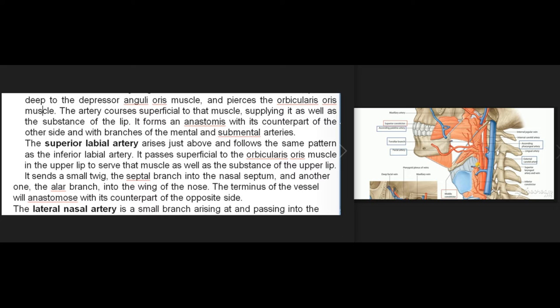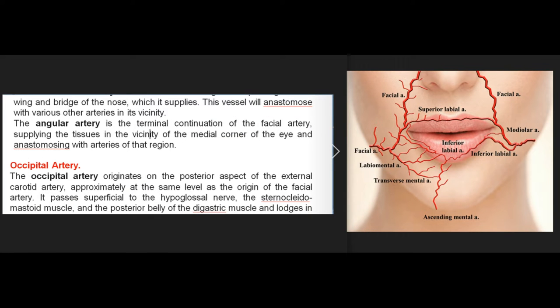The superior labial artery follows the same pattern as the inferior labial artery, passing superficial to the orbicularis oris muscle in the upper lip, sending a septal branch into the nasal septum and an alar branch into the wing of the nose. The lateral nasal artery is a small branch supplying the wing and bridge of the nose. The angular artery is the terminal continuation of the facial artery, supplying tissues near the medial corner of the eye and anastomosing with arteries of that region.